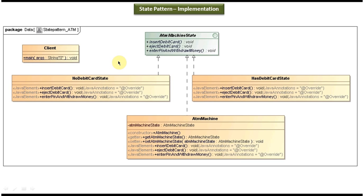This is the class diagram of the scenario we just discussed. Here you can see 'ATM machine state', which is an interface. This interface has three abstract methods: insert debit card, eject debit card, and enter pin and withdraw money. This interface is implemented by three concrete classes: 'no debit card state', 'has debit card state', and 'ATM machine'. The ATM machine has two states: no debit card state and has debit card state.